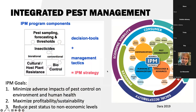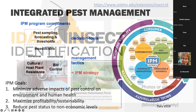I put in a plug for integrated pest management. Given that some of these beetles, even though they are accidental pollinators, might become pests, we want to always rely on an IPM toolkit — where we're sampling our pests, we're forecasting, we're using thresholds. If we are using insecticides, we're considering bio-rationals and conventionals. We use cultural, host-plant resistance, mechanical control, and biocontrol to encompass our IPM program. The goals of IPM are to minimize adverse impacts of pest control on the environment and human health, maximize sustainability, and reduce pest status to non-economic levels.